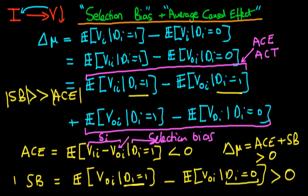In the next video I'm going to talk about the conditions under which we can still estimate the average causal effect, and as we're going to see, it actually relies on the decision as to whether a state receives infrastructure spending being randomly assigned.